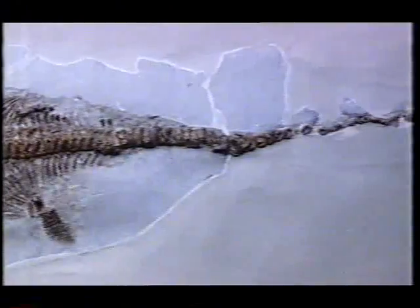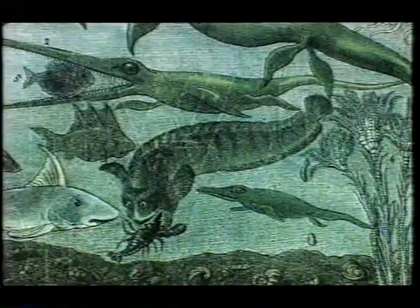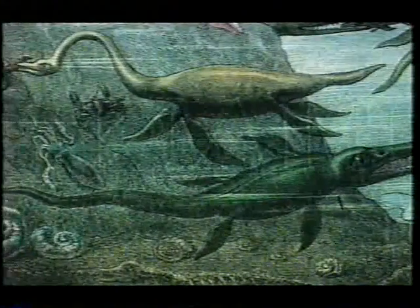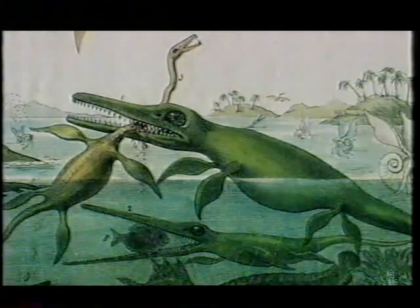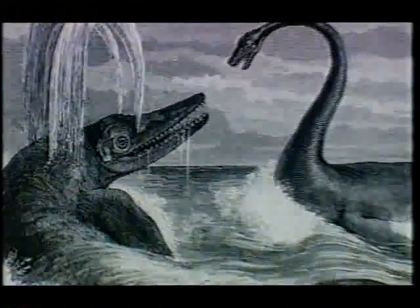The most famous finder of fossils of all time was a girl called Mary Anning, who was born right here in Lyme Regis, the daughter of the village carpenter. When she was 11, she and her brother found what she thought was a crocodile. Actually, it was the best preserved specimen ever found of an ichthyosaur. She went on later to find the world's first plesiosaur and the world's first pterosaur, a flying reptile. Some people suggested that these creatures had died in the great flood described in the Bible. But others wondered why God should have created species which he then allowed to go extinct.